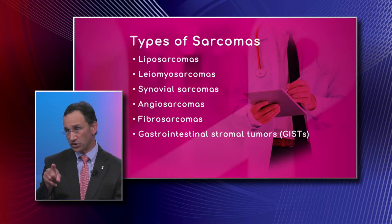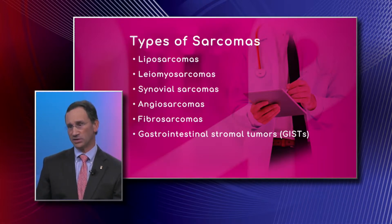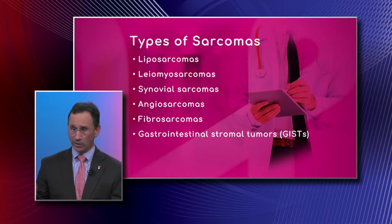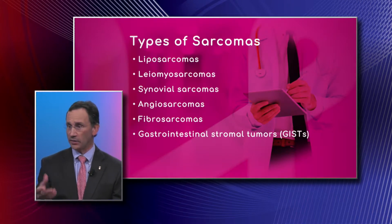And finally, the GISTs that you see at the bottom — those are the ones I mentioned in the stomach, but they can happen in other organs too, like the rectum and the small bowel, and even the fatty tissues in the belly.